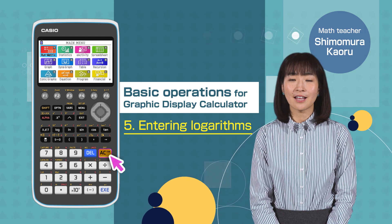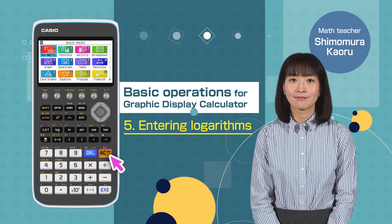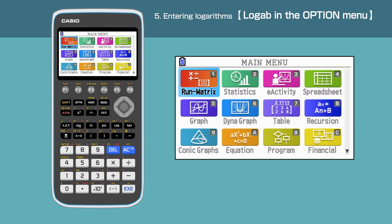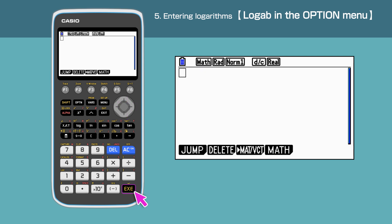Switch on your calculator by pressing the AC button. Press the menu button to open the main menu. Press 1 to enter the Run Matrix menu, or move the cursor and highlight 1, Run Matrix, then press Execute.